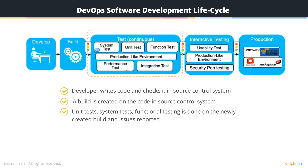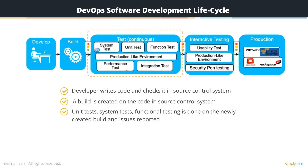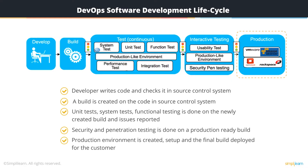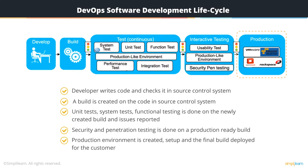You also need to do a deployment of your build into various environments, such as your testing environment, your system integration environment, UAT, or staging. Then finally, you get to do the security and penetration testing once the build is ready for production. Then your production environment is created and set up and the final build is deployed for your end customer.